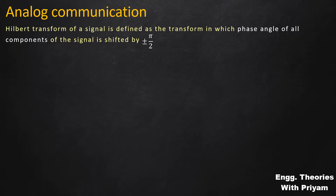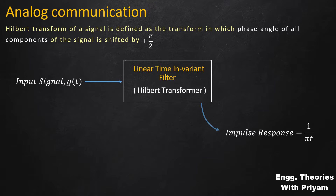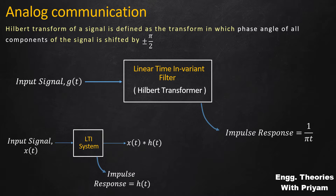The Hilbert transform of a signal is defined as the transform in which the phase angle of all components of the signal is shifted by plus or minus pi by 2. Mathematically, let's say we have a signal g(t) and a linear time-invariant filter known as the Hilbert transformer. The impulse response of this Hilbert transformer is 1/(πt). The output of an LTI system is simply the convolution of the input with the system's impulse response.